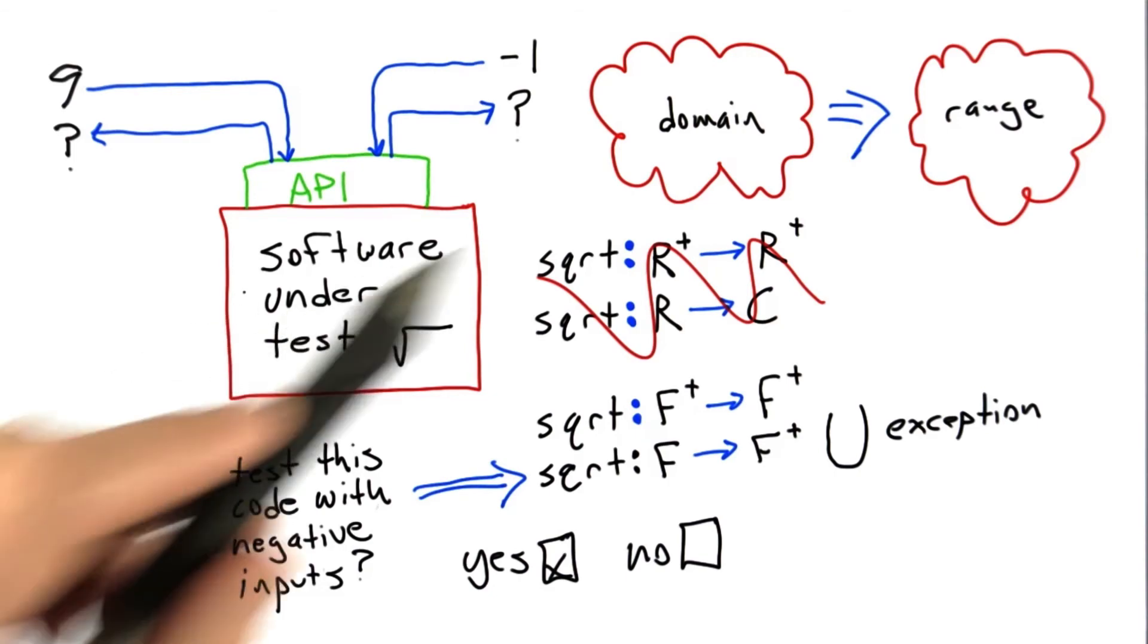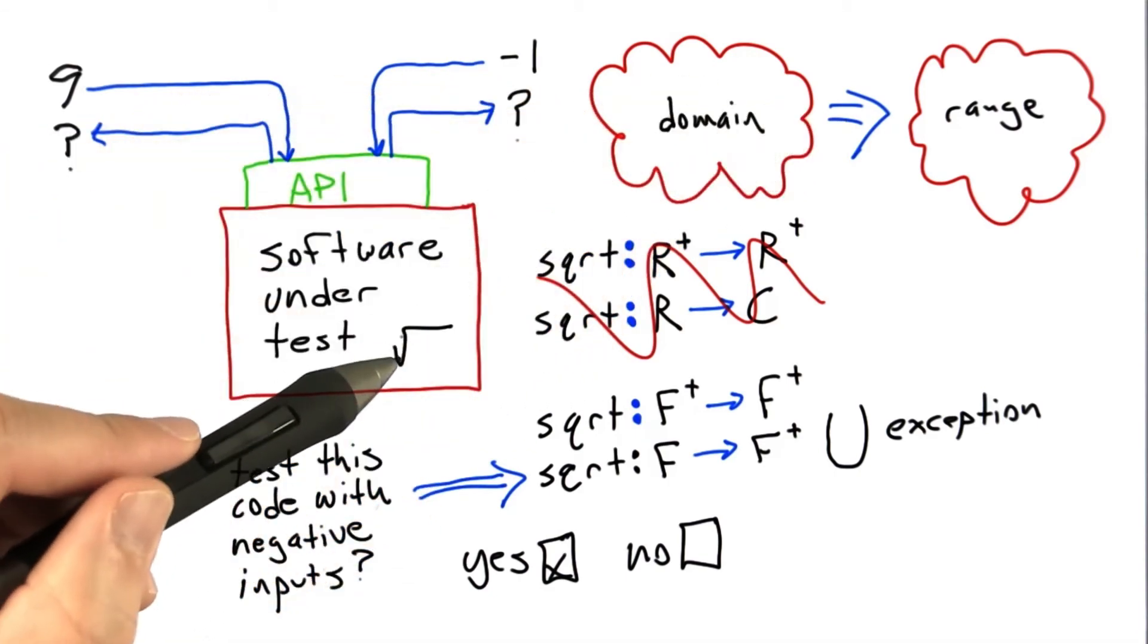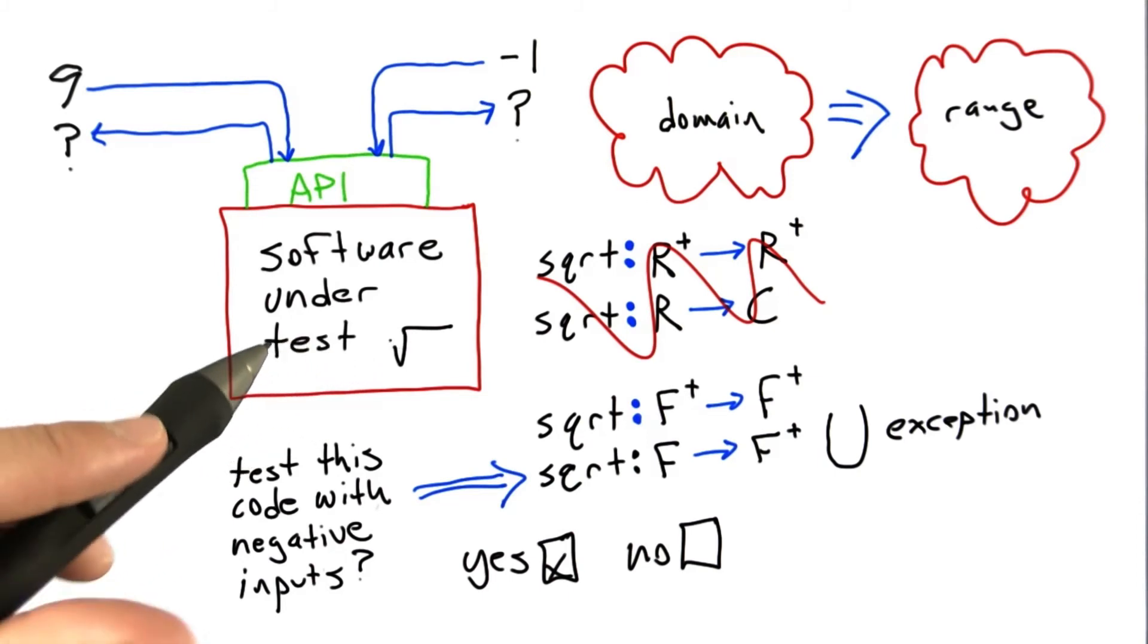Because otherwise, without restrictions on domain, every function that we implement, every piece of software that we implement, has to contain maximal defensive code against illegal inputs.